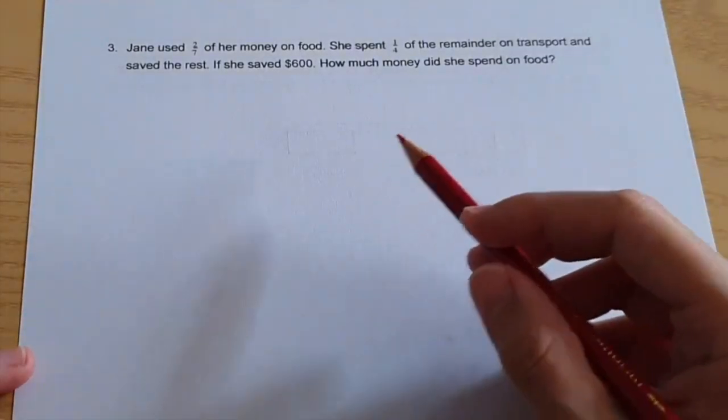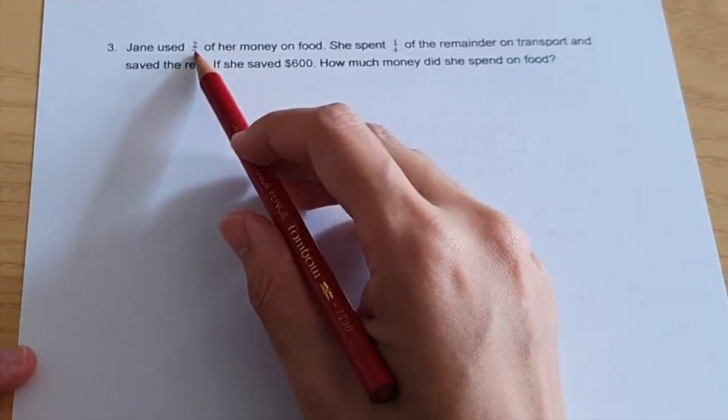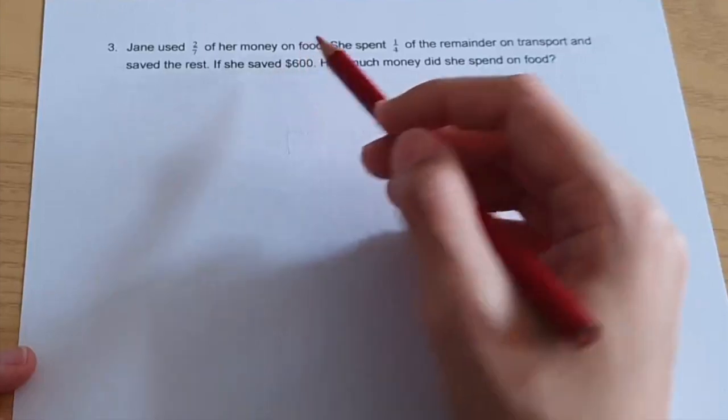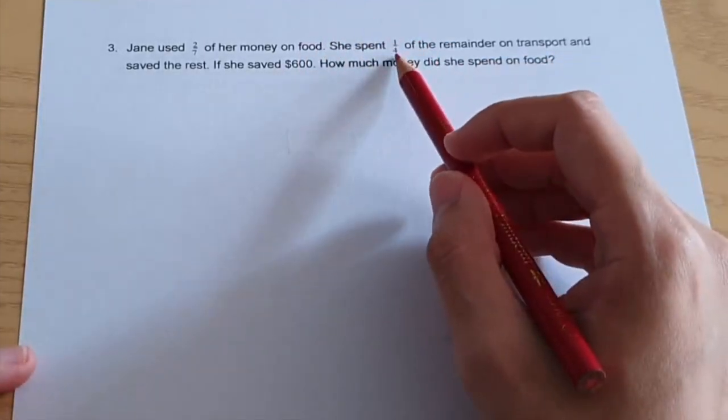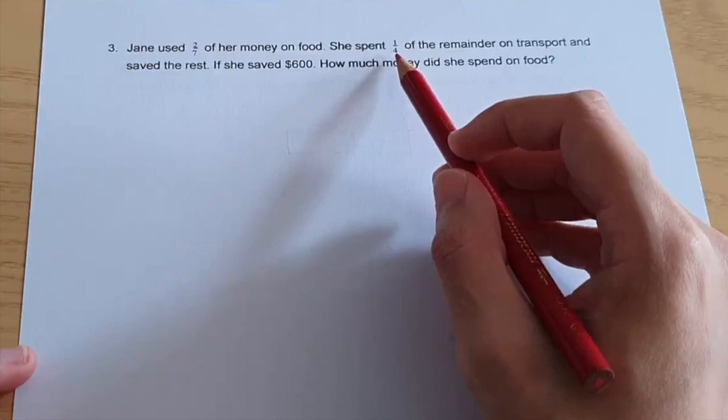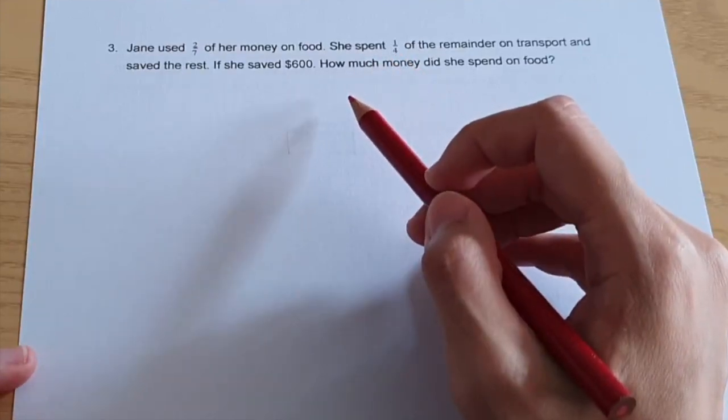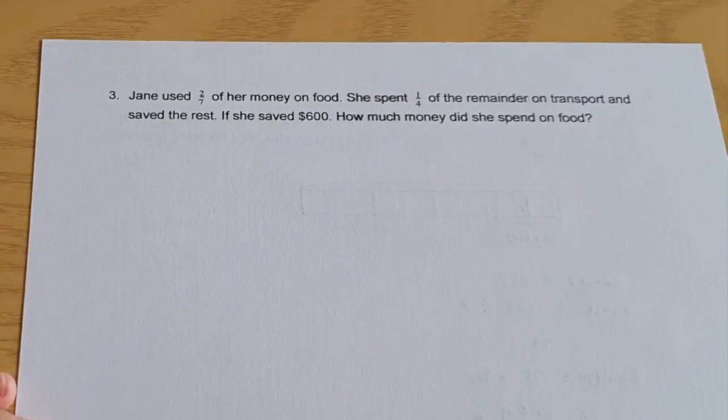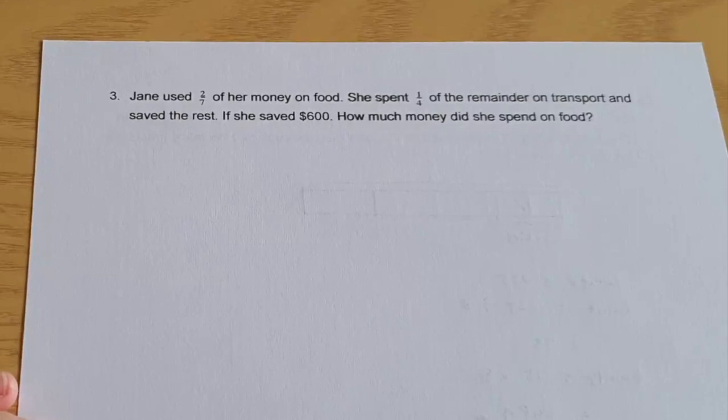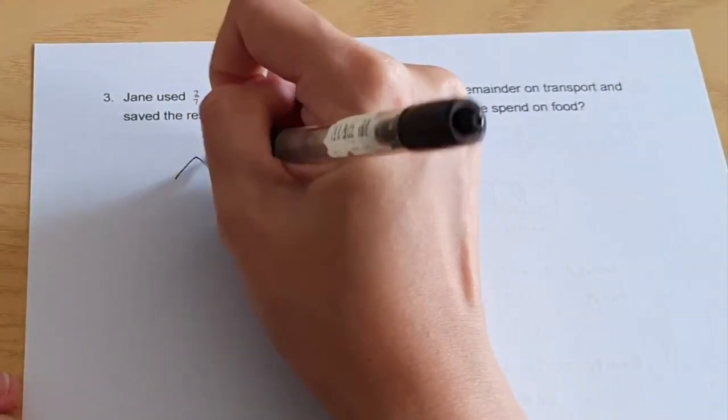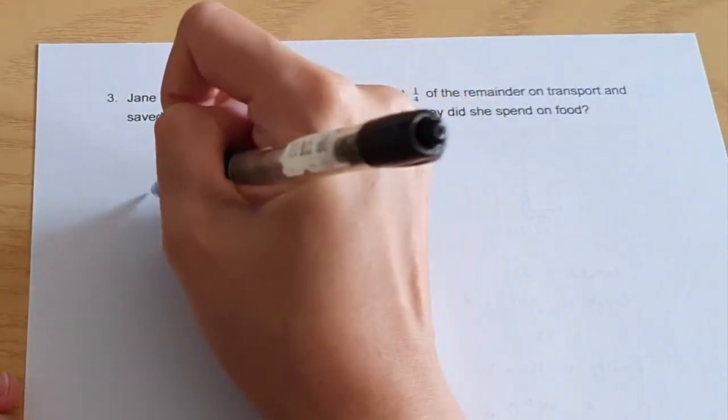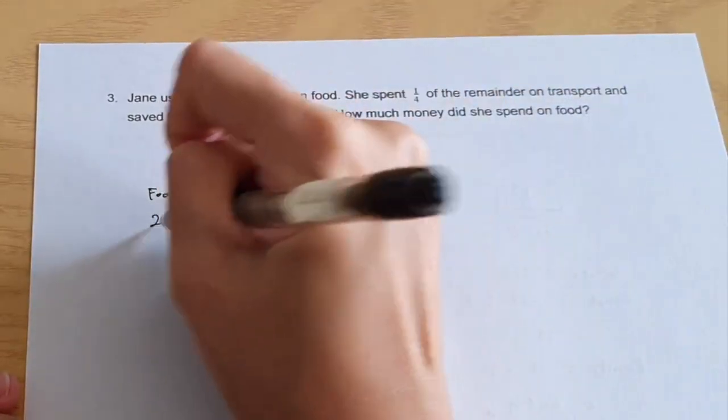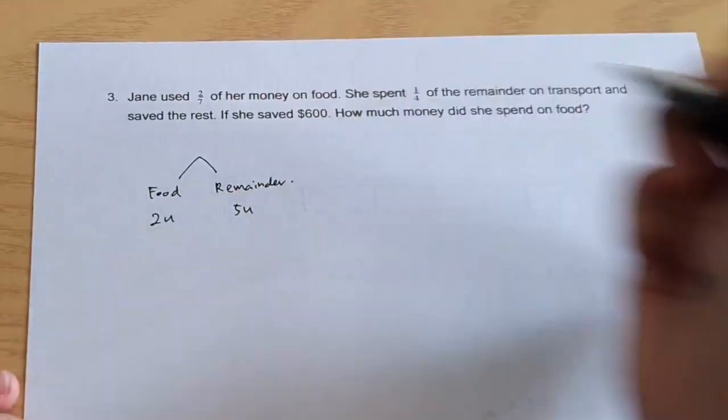For the last question, if you were to try and draw a model, you will draw seven units and two units will be shaded for food. And the remaining five units cannot be cut nicely into four parts. This is why we're going to use branching method to solve this question. Jane used two seventh of her money on food. She spent one quarter of the remainder on transport. So we're going to split open. She spent on food. And after that, she had remainder. Two units on food and five units for the remainder.